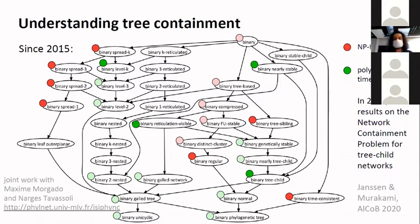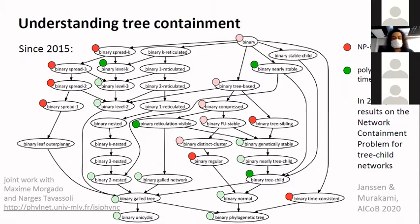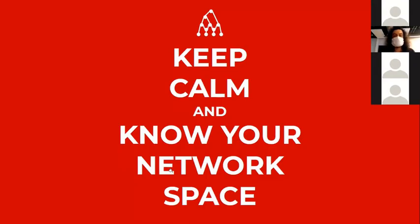We are starting to understand better how trees can be found inside networks. And actually we can even go further now — this year was the first year where we had some results on the network containment problem, meaning: is a species network contained in another one? This could be useful to compare two networks if you're evaluating candidates to see what is comparable between the two.